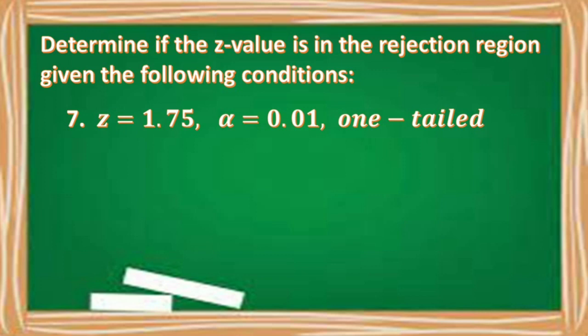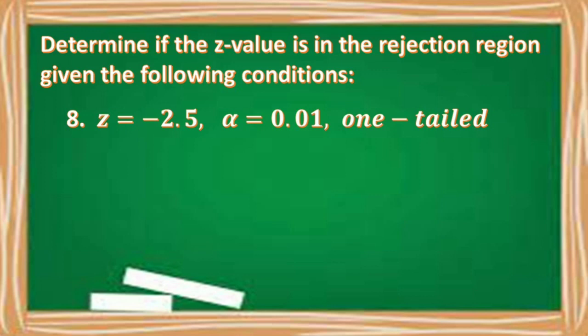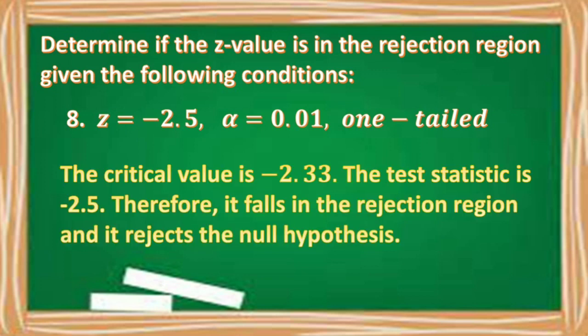Number seven: Z = 1.75, α = 0.01, one-tailed. Critical value is +2.33. Since 1.75 < 2.33, it falls in the acceptance region — do not reject the null hypothesis. Number eight: Z = −2.5, α = 0.01, one-tailed. Critical value is −2.33. Since |−2.5| > |−2.33|, it falls in the rejection region — reject the null hypothesis.